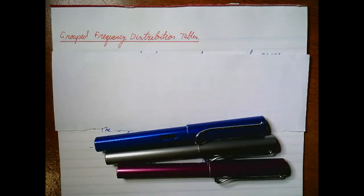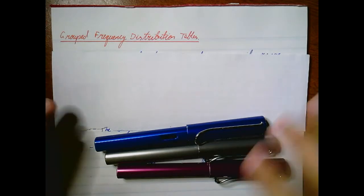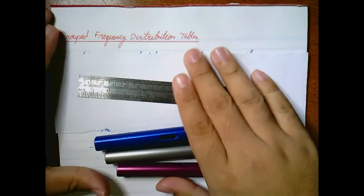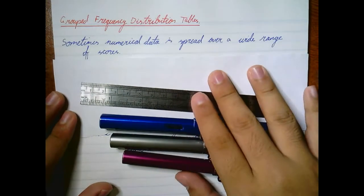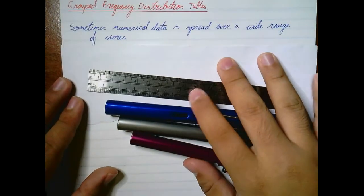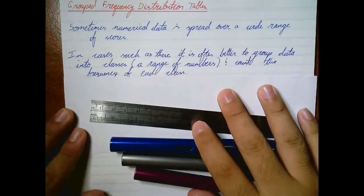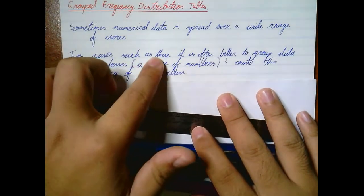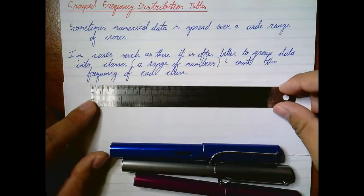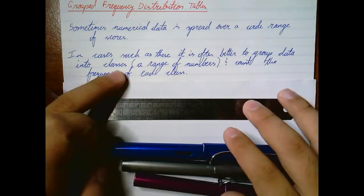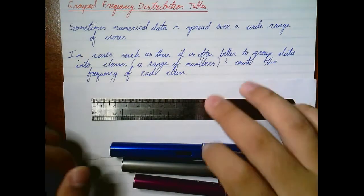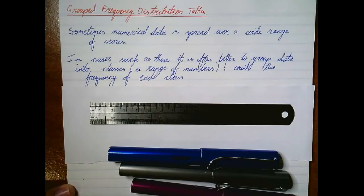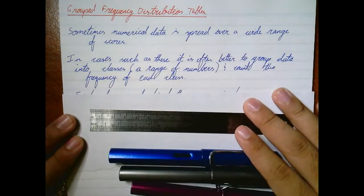Hello class, this is a video tutorial on grouped frequency distribution tables. Let's get straight into it. Sometimes numerical data is spread over a wide range of scores. In cases such as these, it is often better to group data into classes. Classes is a range of numbers, and count the frequency of each class. It'll make more sense as we go on.